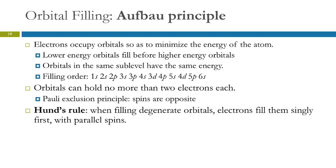As electrons occupy orbitals in an atom, they do so in a way that minimizes energy — like a rock rolling down a hill to its lowest point. So electrons fill lower-energy orbitals first. Each orbital can hold no more than two electrons, and the Pauli Exclusion Principle requires the spins to be opposite. Then there's Hund's Rule: if you're filling degenerate orbitals, like those p orbitals that all have the same energy, put electrons in each one singly first with parallel spins, and then pair them up.